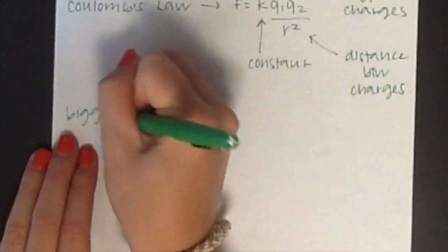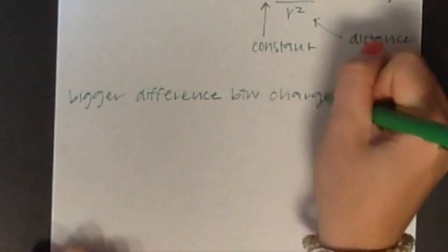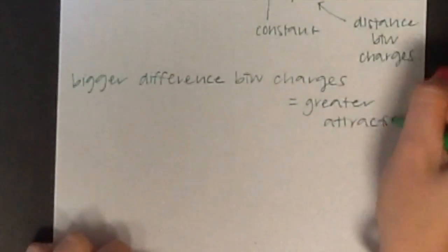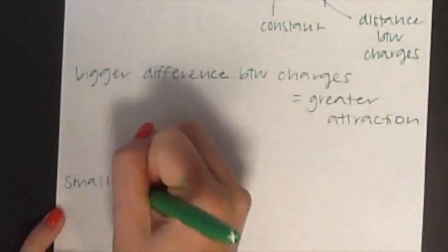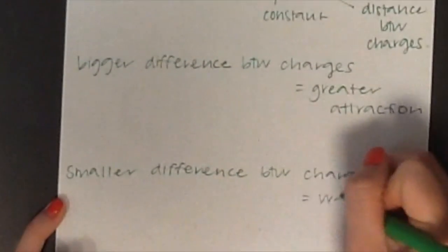The bigger the difference between charges shows a greater attraction between the two charges, meaning that this compound will be less likely to dissociate into ions. If there is not a big difference between the two charges, then it will have a weaker attractive force, meaning that it will be likely to dissociate into ions.